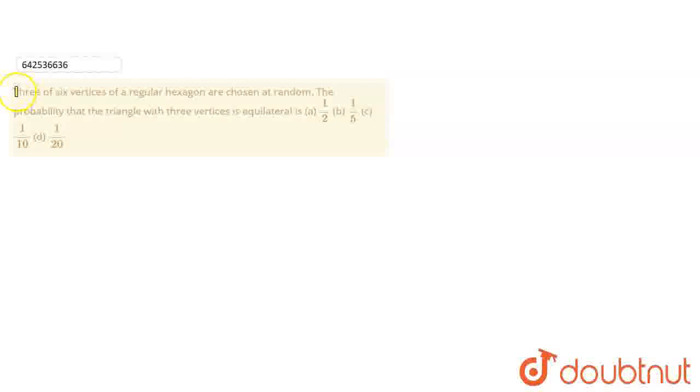So the question is: 3 of the 6 vertices of a regular hexagon are chosen at random. The probability that the triangle with 3 vertices is equilateral is (a) 1/2, (b) 1/5, (c) 1/10, or (d) 1/20. We have to find the probability that the triangle with the 3 vertices is equilateral.